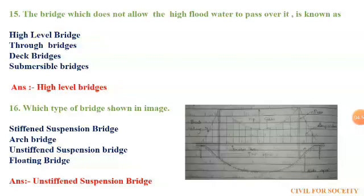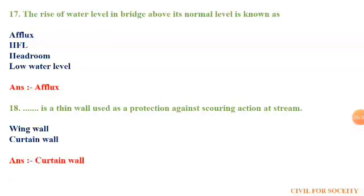The fifteenth question: which type of bridges are shown in the image? The first option is stiffened suspension bridges, second is arc bridges, third is unstiffened suspension bridges, and fourth is floating bridges. The correct answer is unstiffened suspension bridges. The seventeenth question: the rise of water level in a bridge above its normal level is known as. The first option is efflux, second is HFL, third is headroom, and fourth is low water level. The correct answer is efflux.